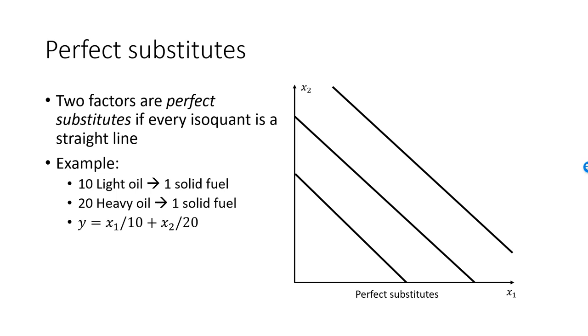Solving for x2, I get x2 equal to 20y minus 2x1, and this is the equation of an isoquant. This is a linear function, so all isoquants are straight lines.